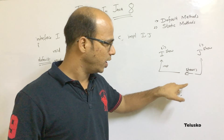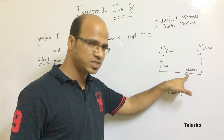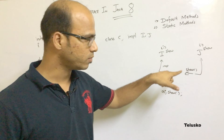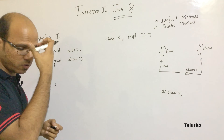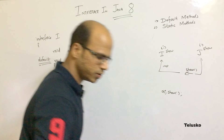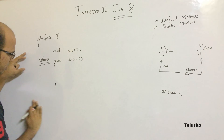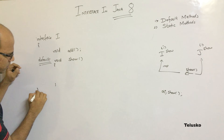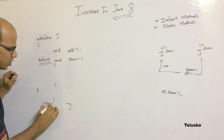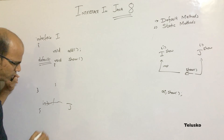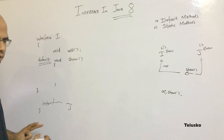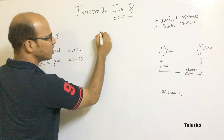So to summarize: if you implement only one interface, no need to define the default method in your class. But if you implement two interfaces and both have the same default method, you must override it in your class.